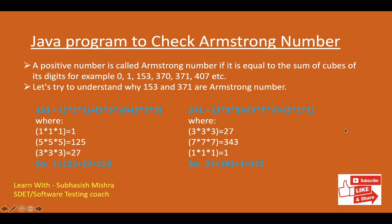Let's understand why 153 and 371 are Armstrong numbers. For 153, the digits are 1, 5, and 3. We find the cube of each digit: 1×1×1 = 1, 5×5×5 = 125, and 3×3×3 = 27. Adding them: 1 + 125 + 27 = 153. So the number equals the sum of cubes of its digits.